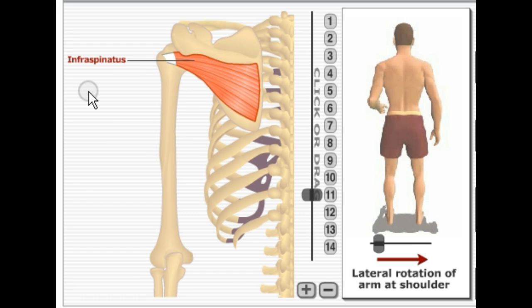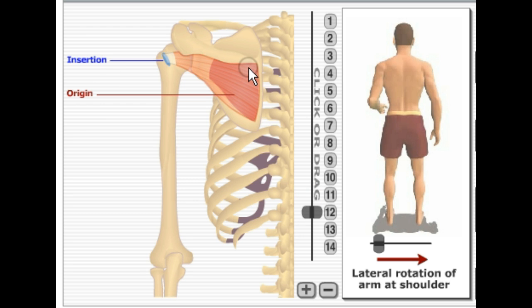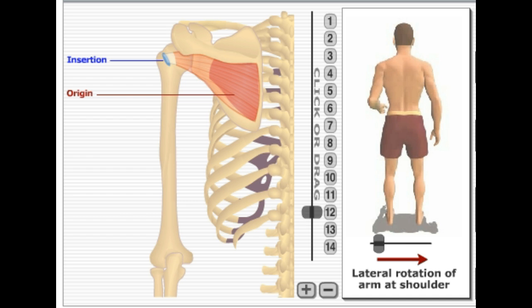Next is infraspinatus. It's going to originate in the infraspinatus fossa of the scapula and insert on the greater tubercle of the humerus. The action it performs is lateral rotation of the arm at the shoulder.